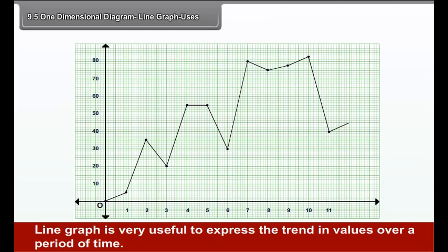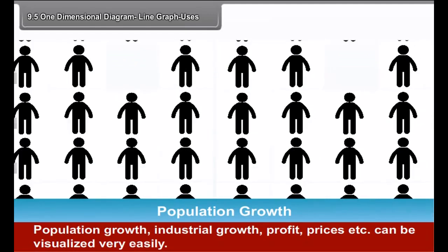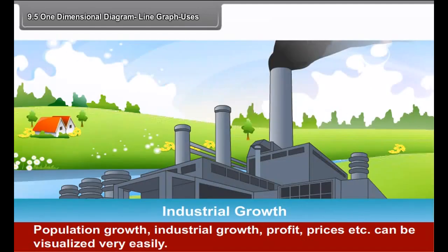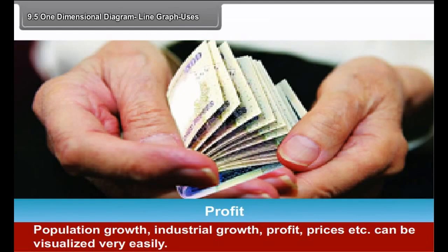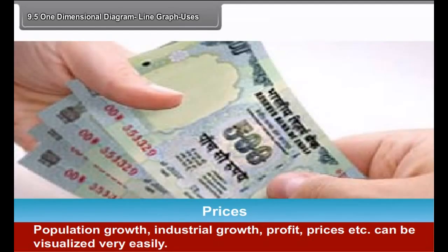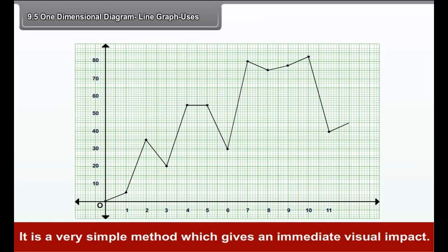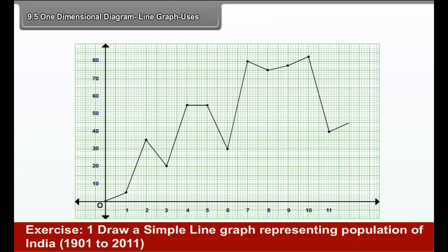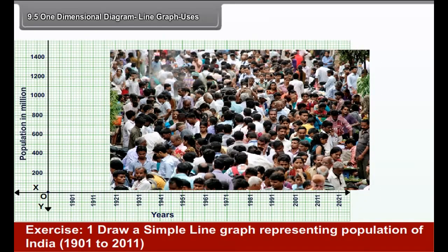Method. Read the data to find out the highest and lowest value. Accordingly, select the scale on both the axes. Mark time period on x-axis and the other elements on y-axis. Plot the points in the graph space with reference to the values on x and y variables by intersecting the two values. Join all the points with a smooth curve. Write the scale, title and legend, etc.